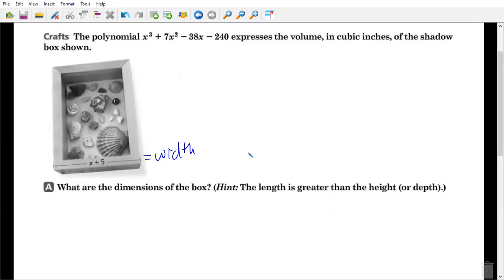Like any other word problem, you want to make sure you identify any variables you need, any given information. So we know our width is x plus 5. We know what our volume is. So we know the volume. We know the equation for volume of a rectangular prism is length times width times height.